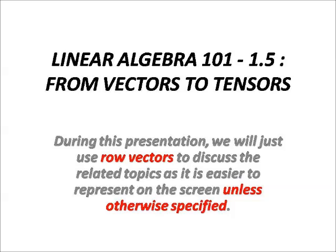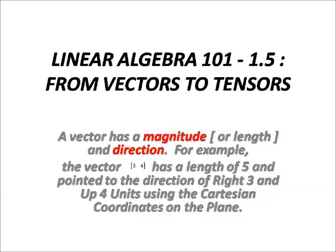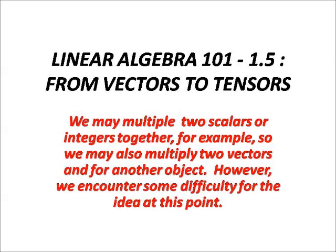During this presentation, we will use row vectors to discuss the related topics as it is easier to represent on screen unless otherwise specified. A vector has magnitude and direction. For example, the vector [3, 4] has a length of 5 and points right 3 and up 4 on the plane.